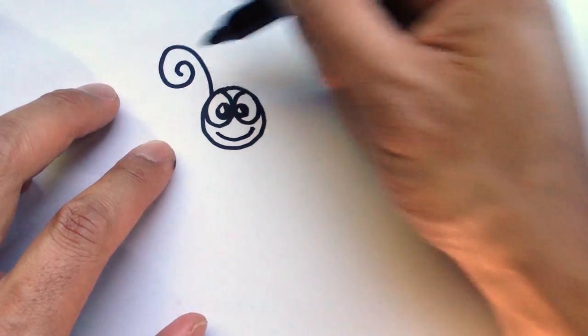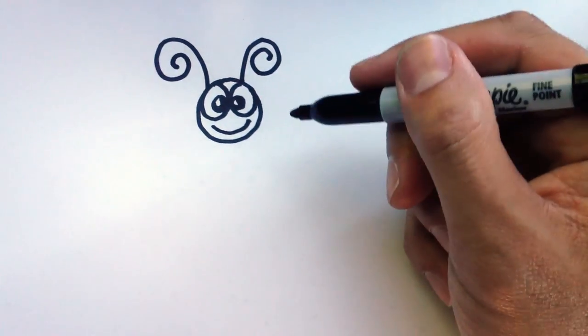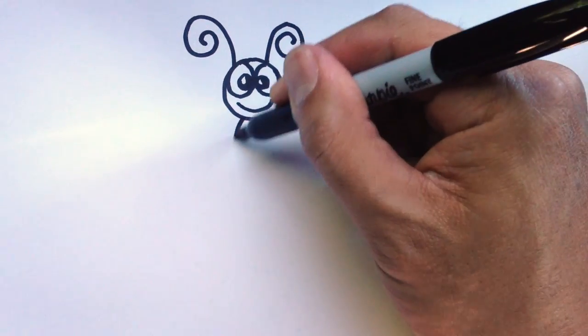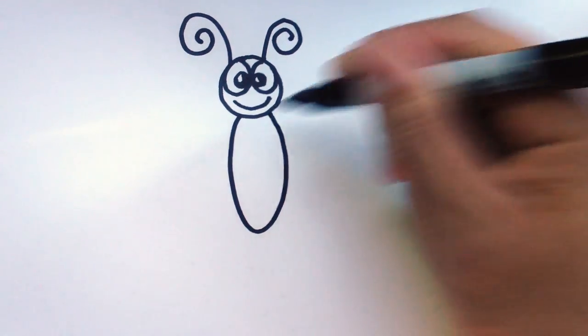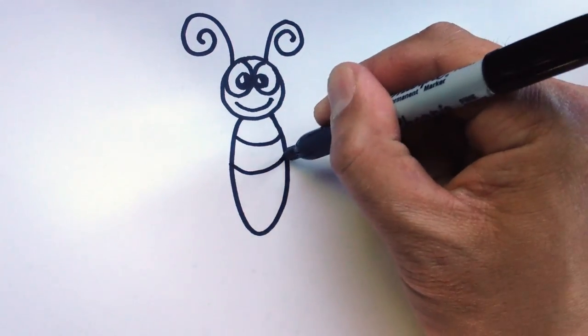Now I'm going to draw in some curly antennas, just like that. Now we're going to move into the body and draw a little body, just like so. I'm going to put a couple lines through the body.